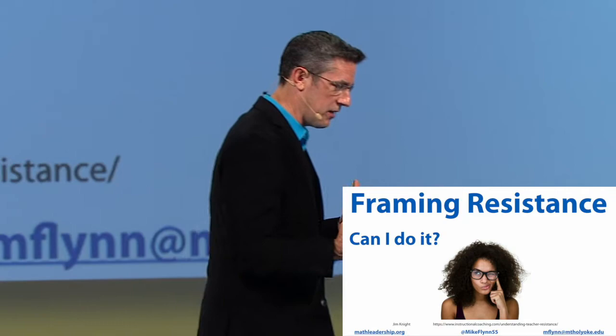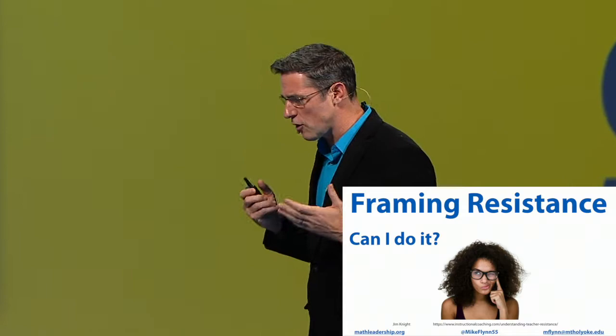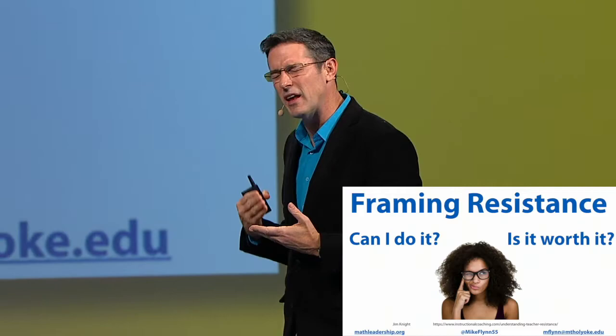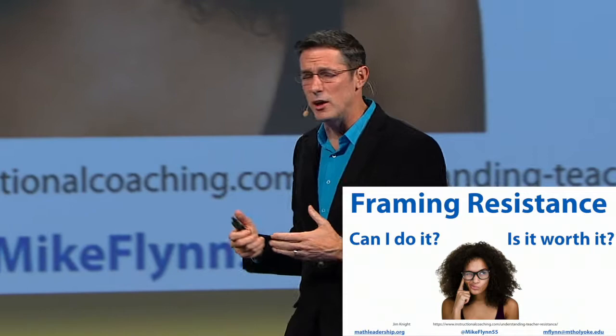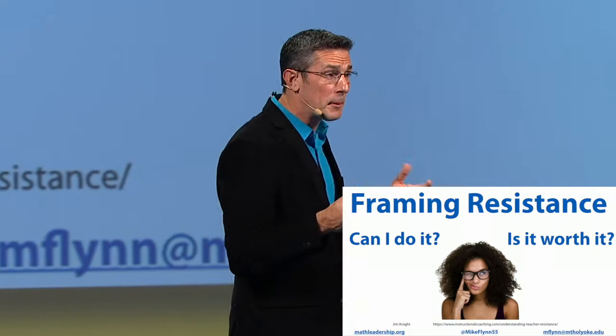Another way to understand resistant behavior comes from Jim Knight. He has a much simpler way of looking at it — he thinks of it in two lenses. He says people resist change often from two views: one, 'Can I do it?' — and two, 'Is it worth it?' So one has to do with confidence, the other has to do with value. If they don't see the value in it, the way we have to approach it is to elevate the value. If it's the confidence thing, then we have to work on that confidence piece.